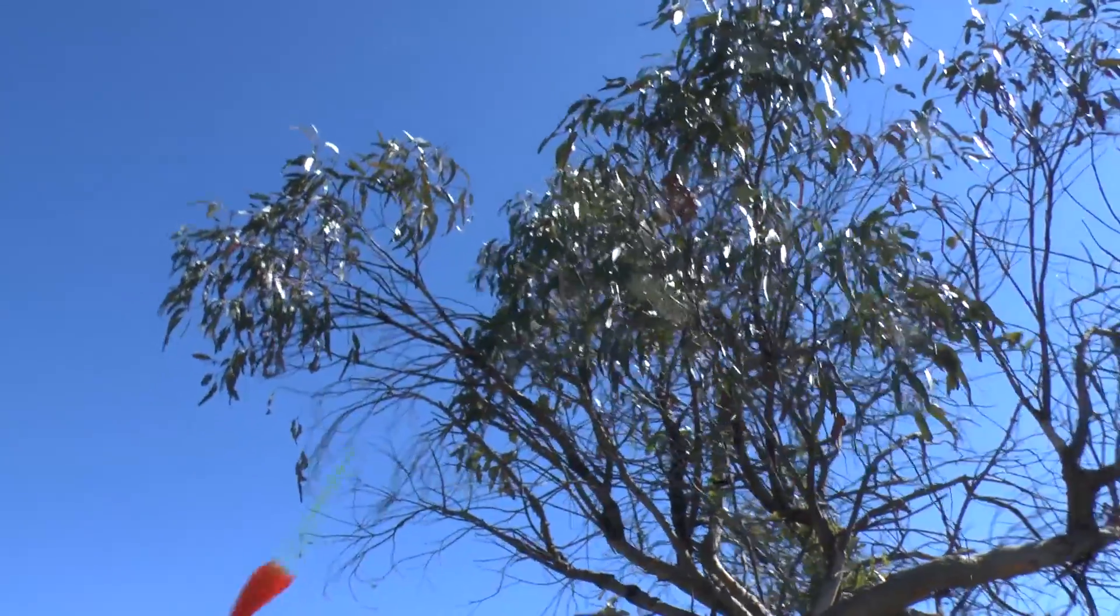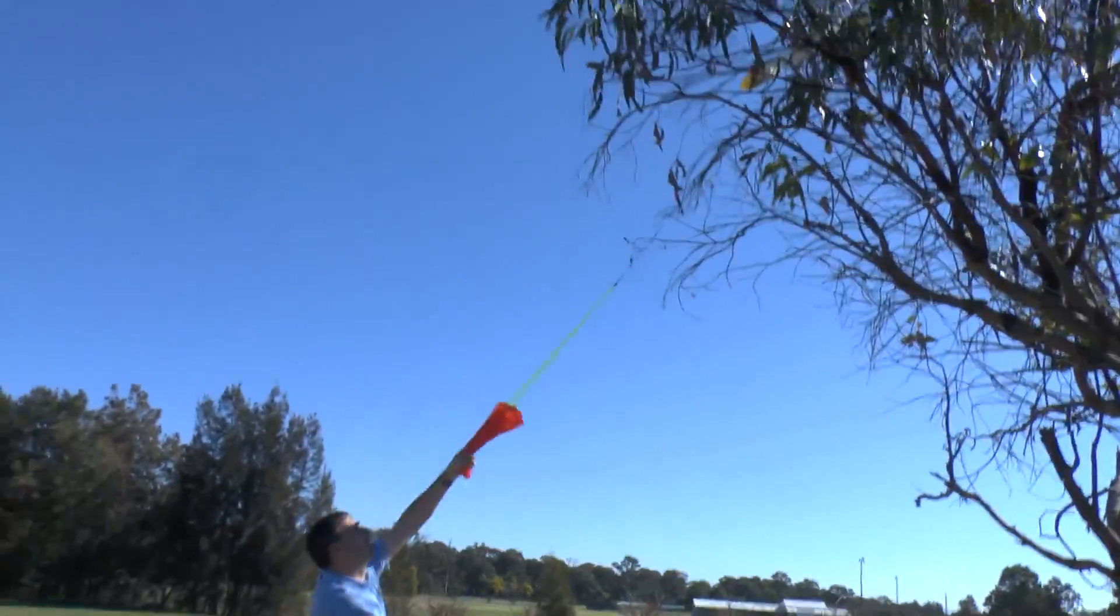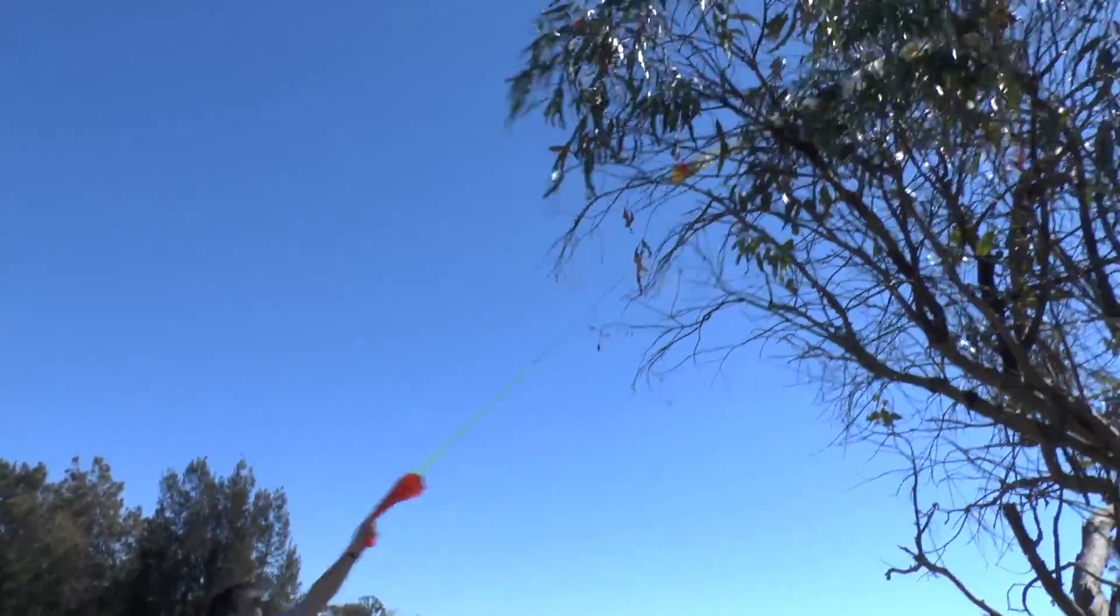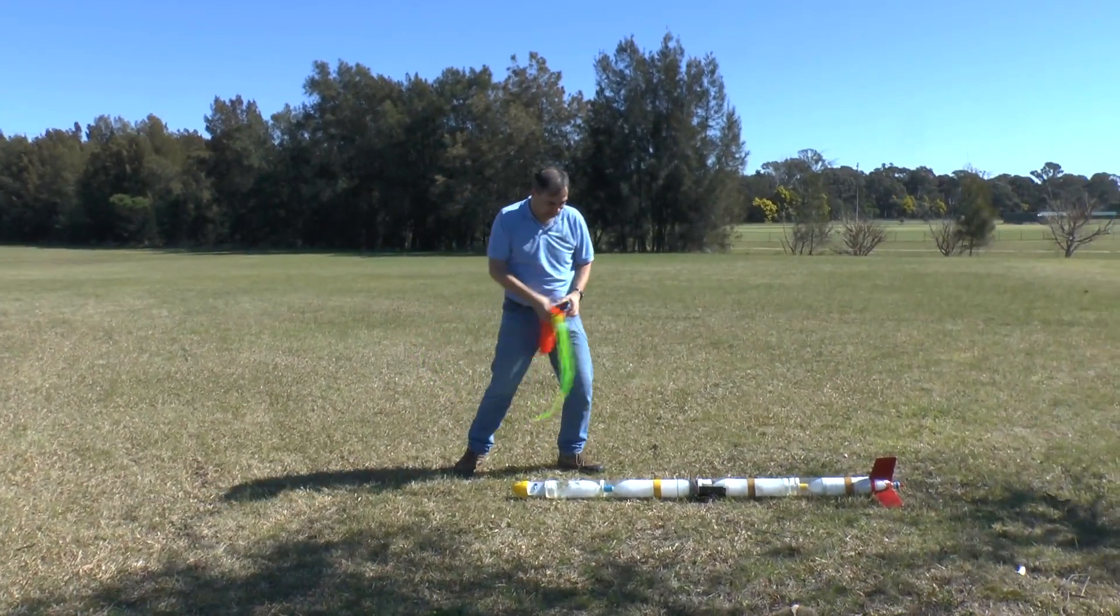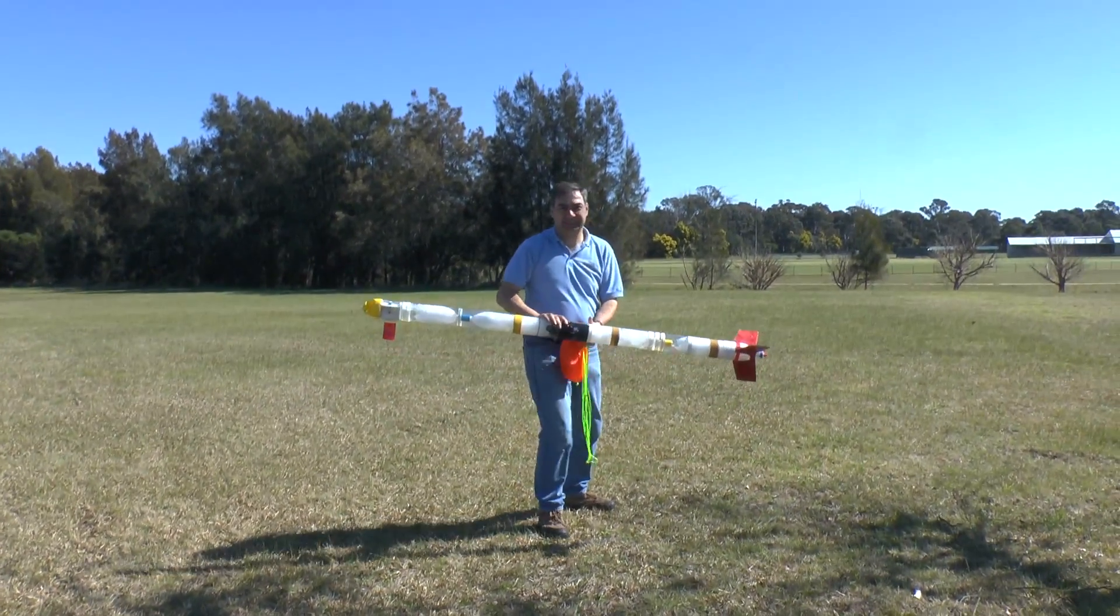Now we just had to get the electronics back from this tree and they were ready to be put into Light Shadow for its maiden flight. We just needed to make sure that the barometric sensor was shielded from the sun and lesson was learned.